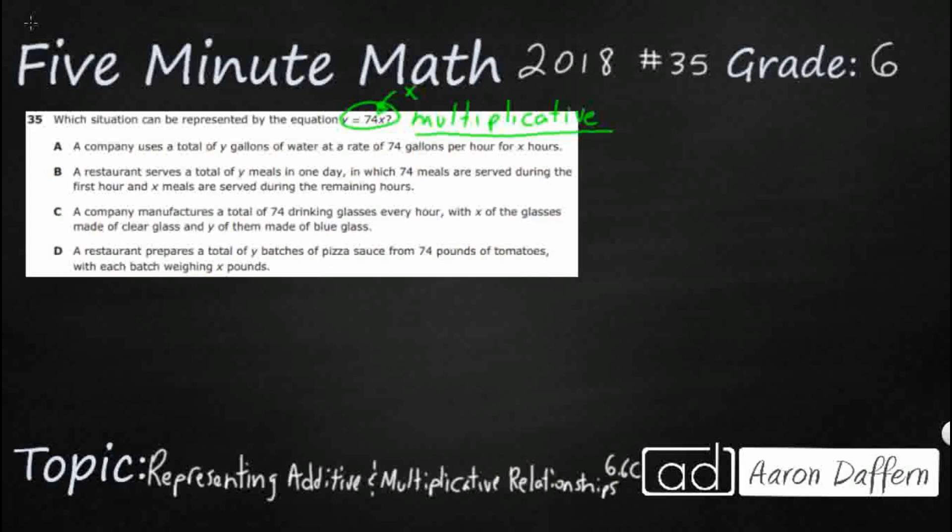A company, A, uses a total of y gallons, so they're going to give us our total right away. So let's say y equals, so we've got a total of y gallons at a rate of 74 gallons per hour for x hours. So 74 gallons per hour. Now, here is our clue right here.